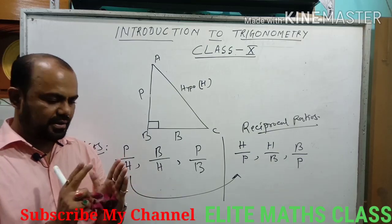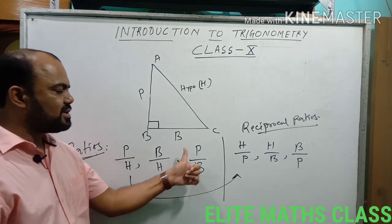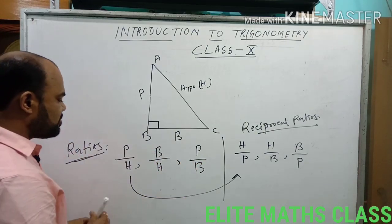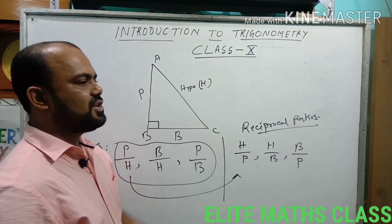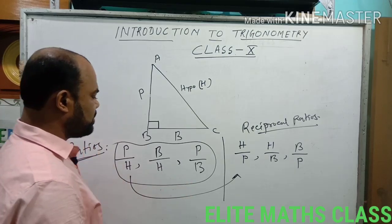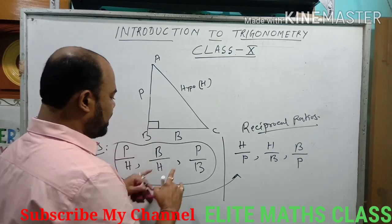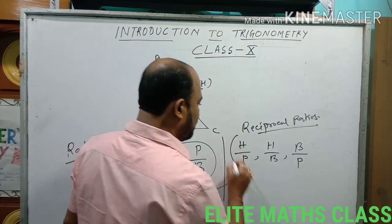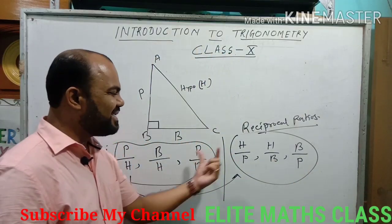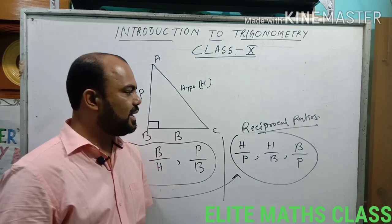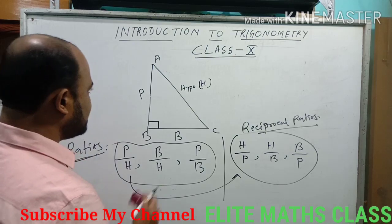The main 3 ratios are: Perpendicular by Hypotenuse, Base by Hypotenuse, and Perpendicular by Base. From these ratios, 3 different trigonometrical ratios are defined, and for these 3, another 3 trigonometrical ratios are defined as reciprocals. So ultimately we have 6 different trigonometrical ratios. Now let's see their names in a table format.